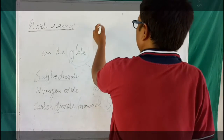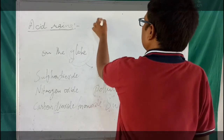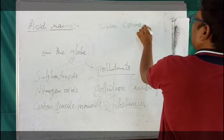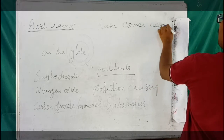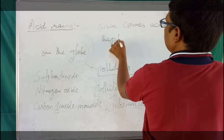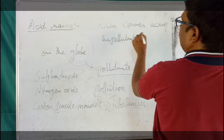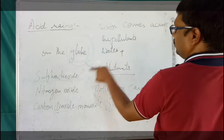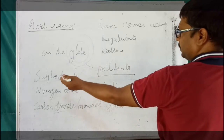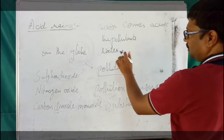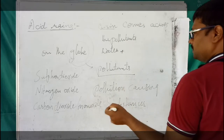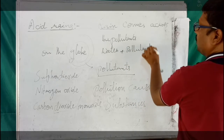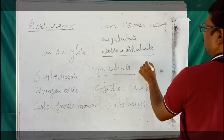So these pollutants come across the raindrops — it is nothing but water — and the pollutants are there. You can see these names of the pollutants, and not only these, many pollutants are there in the atmosphere. They get reacted with water, and water and the pollutants react and they produce some acids.